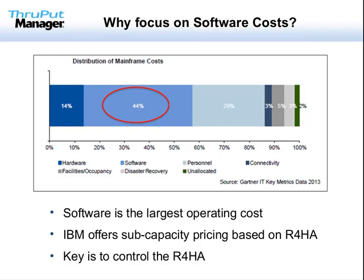Software is easily the largest operating expense in the data center, and it's growing every year. While subcapacity pricing allows billing based on peak consumption, running without caps means a spike in the rolling four-hour average can lead to unacceptably high software bills. Caps provide the ability to control this cost, but at a price to performance. What's needed is a way to control the rolling four-hour average without the unwanted performance hit. Now let's review subcapacity pricing.